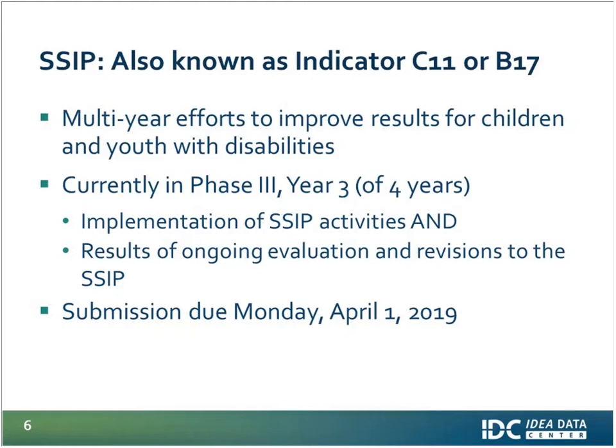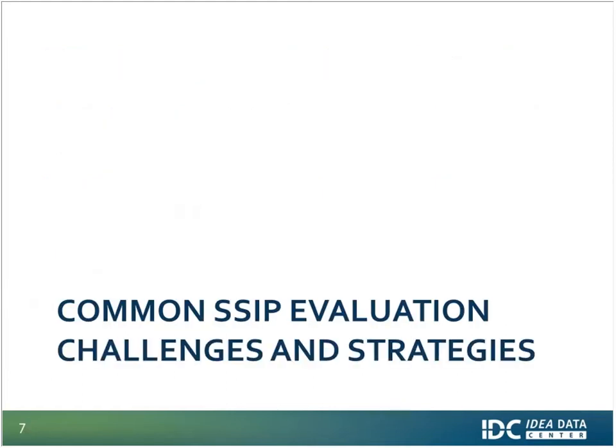Each report includes progress updates since the last submission, so this April submission will focus on what occurred during year three of Phase 3. Over the past years, we at IDC have worked with numerous states as they implement their SSIPs and gather data to evaluate their progress and results. Directors and lead agency coordinators face many decision points, including challenges in the SSIP evaluation. Based on our most recent TA work with states, I'll discuss common challenges and share strategies for addressing them.